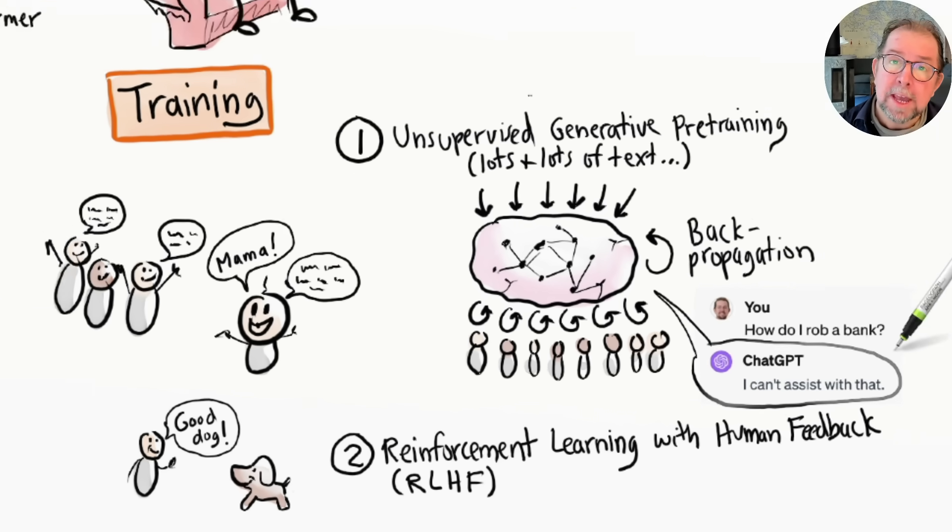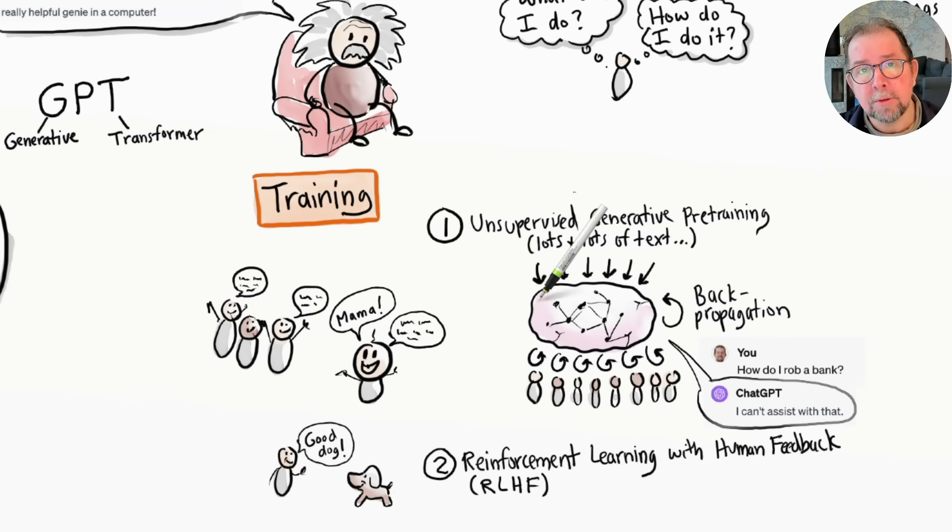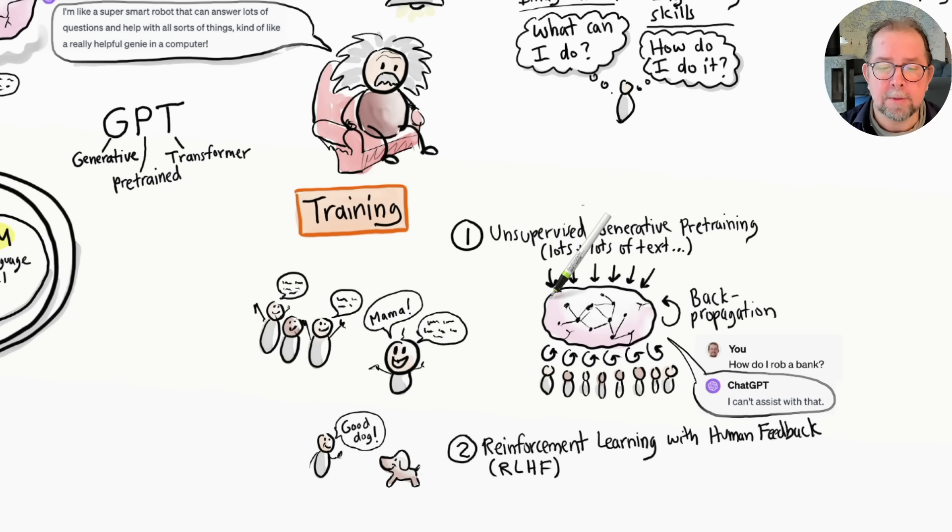When training is done, the model is mostly frozen, other than some fine-tuning that can happen later. That's what the P stands for in GPT: pre-trained. Although in the future we will probably have models that can learn continuously rather than just during training and fine-tuning.